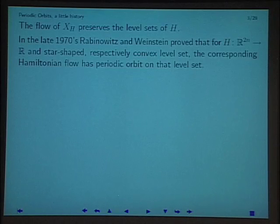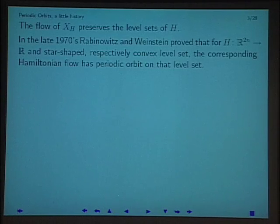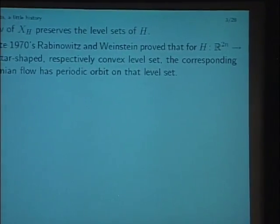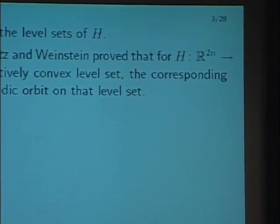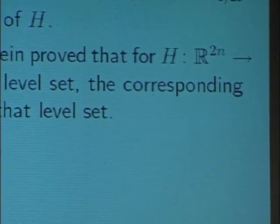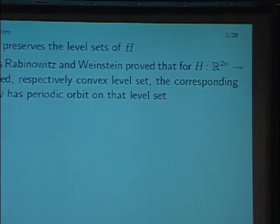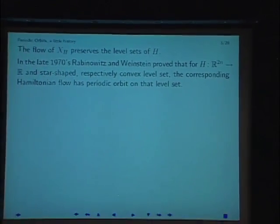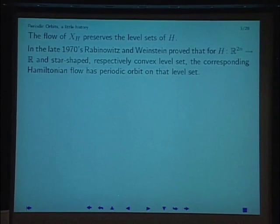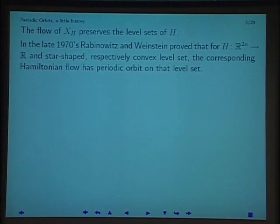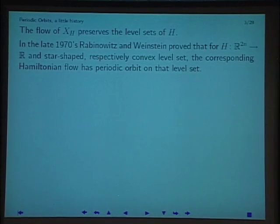In the late 70s, Paul Rabinowitz and Alan Weinstein proved quite an important result. If you have a Hamiltonian on R^{2n} where the interior of the sublevel set is either star-shaped (Rabinowitz's case) or convex (Weinstein's case), and you look at the induced flow on the boundary, then the corresponding Hamiltonian flow has a periodic orbit on that level set.